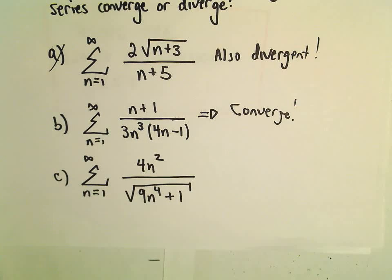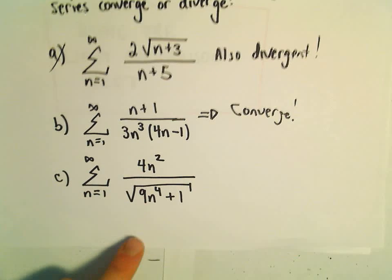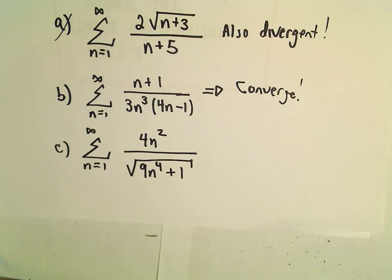So one more example here. The last one we have the series from n equals 1 to infinity of 4n squared over the square root of 9n to the 4th plus 1.